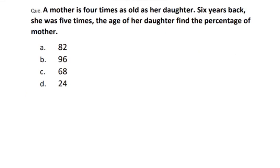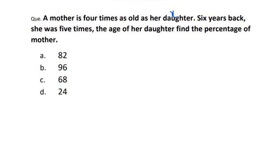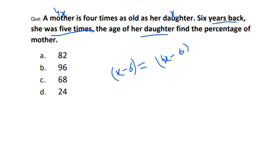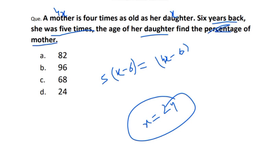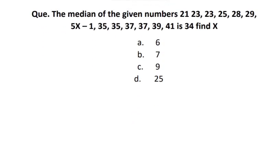Coming to the next question: A mother is four times as old as her daughter. Take the daughter's age as x, so the mother's age is 4x. Six years back, the mother's age was five times the daughter's age. The equation becomes: 4x - 6 = 5(x - 6), which gives 4x - 6 = 5x - 30. Solving, x = 24. The daughter is 24, so the mother's current age is 4 × 24 = 96. Option B is the correct answer.